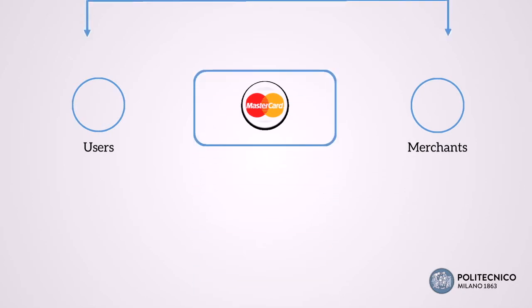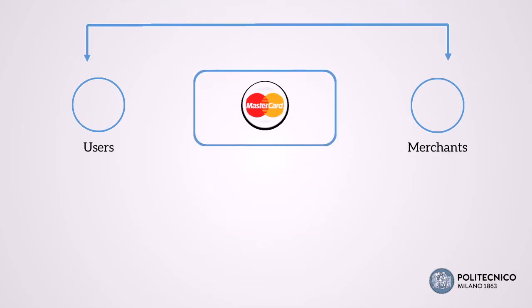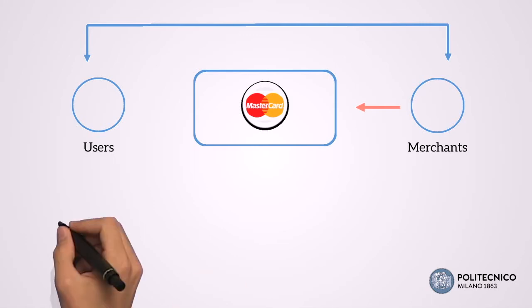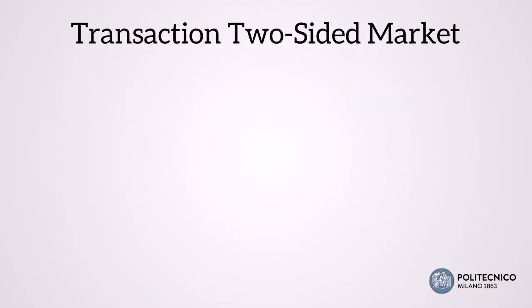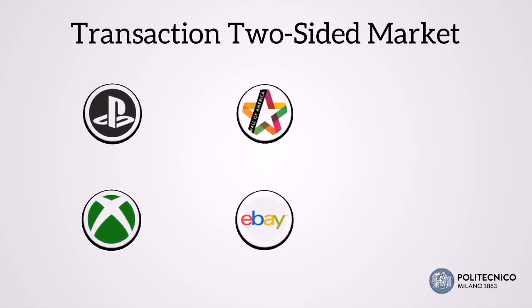This creates a platform that enables a direct transaction between the two groups, and the service is usually paid through an interchange fee kept on the merchant side. This is an example of a transaction two-sided market, a market structure that enables offering free products through subsidization. Other traditional examples of two-sided markets are game consoles, shopping malls, and services based on the concept of matching.